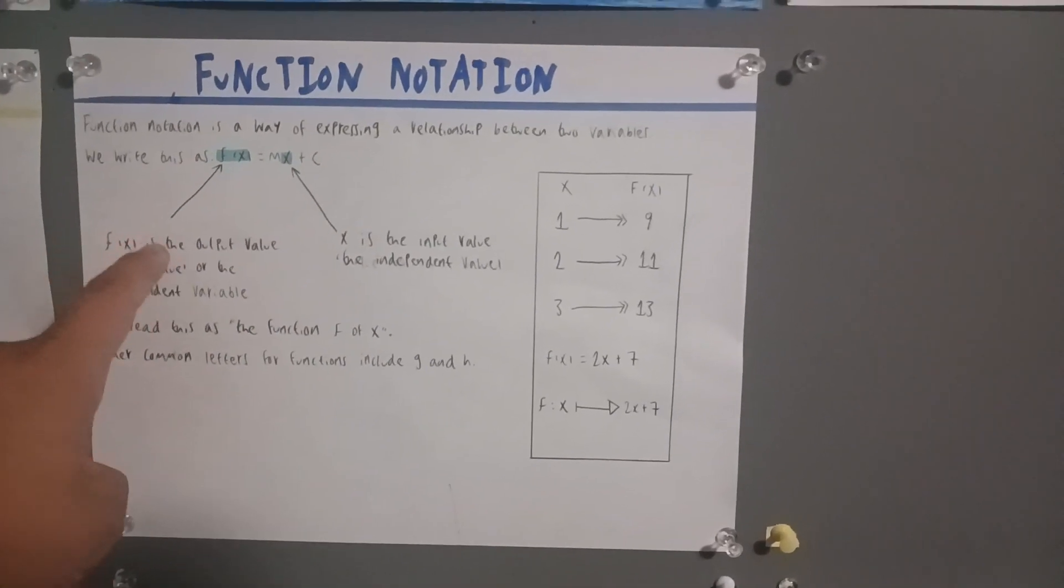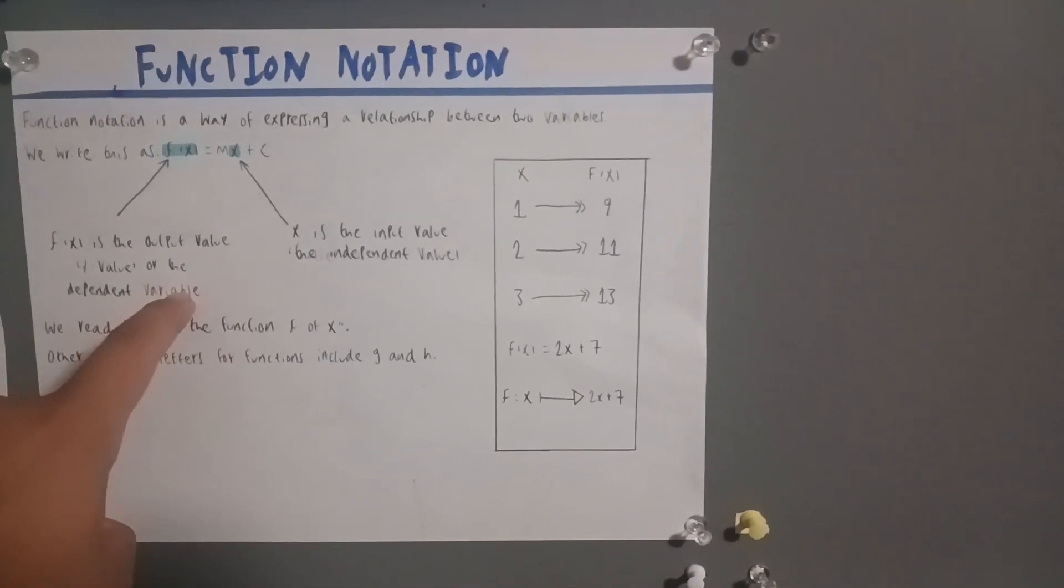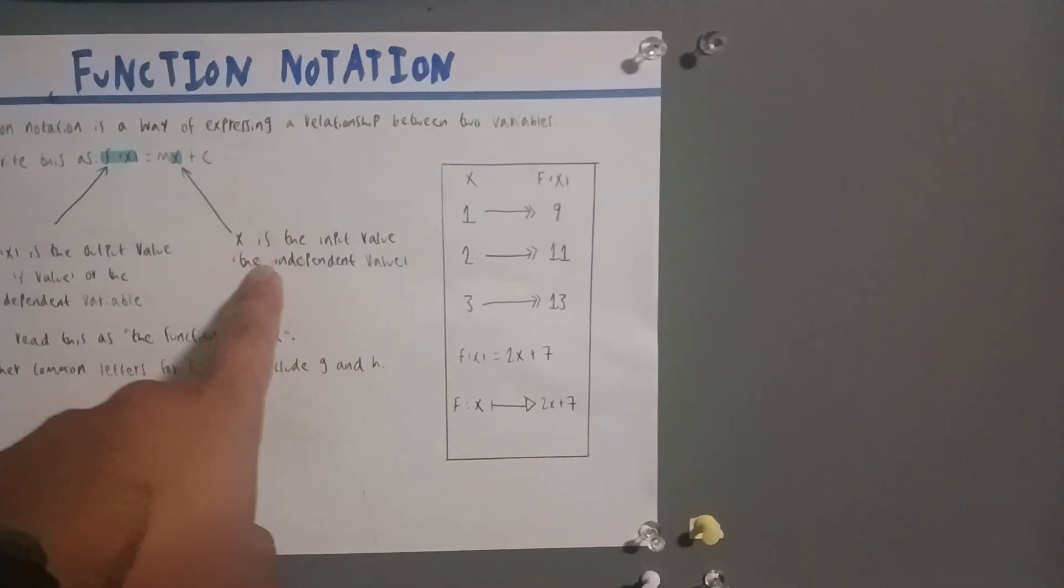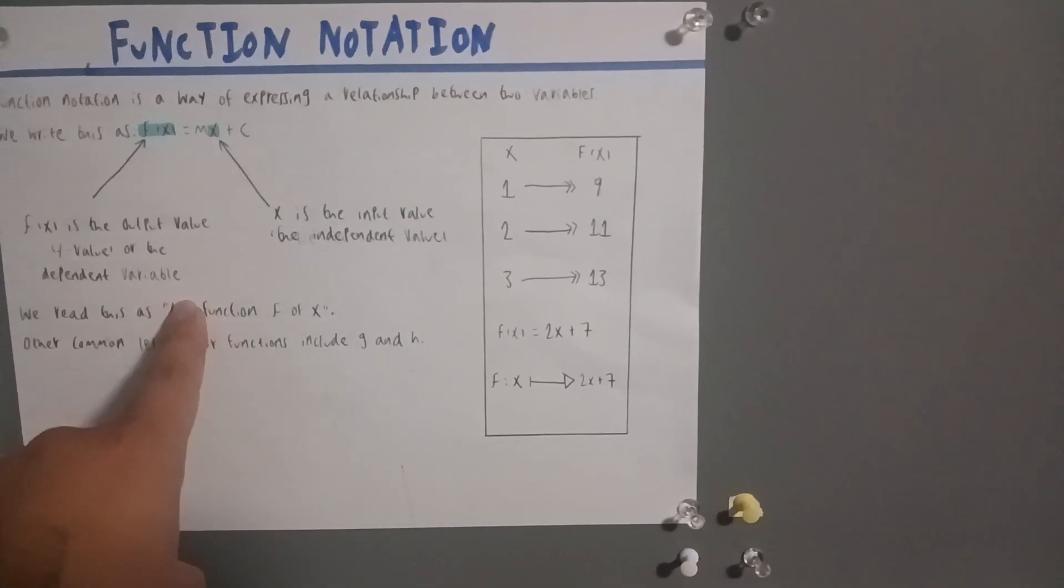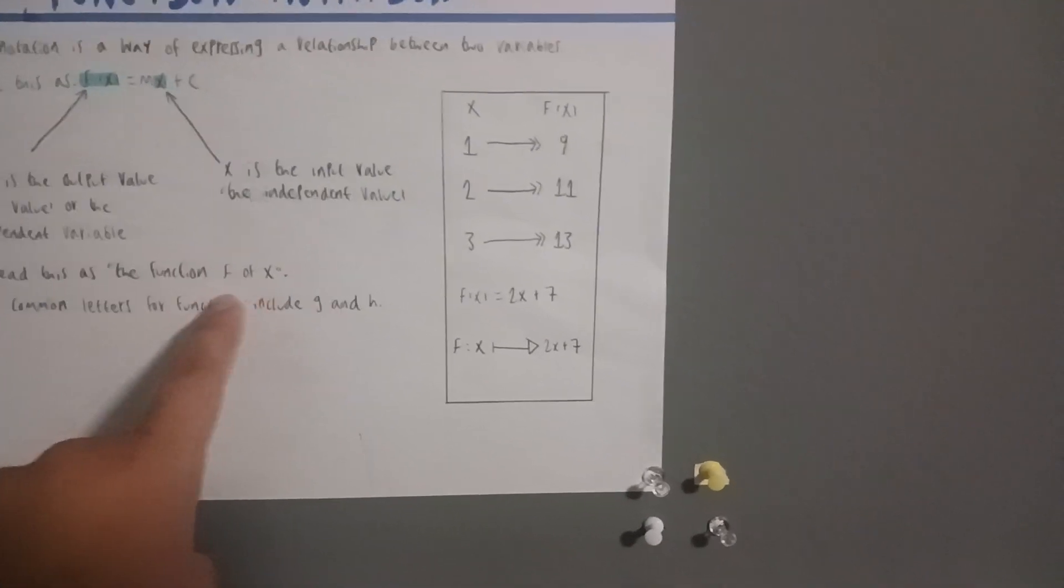Right here, f of x is the output value, y value, or the dependent variable. And right here, x is the input value, the independent value. We read this as the function f of x.